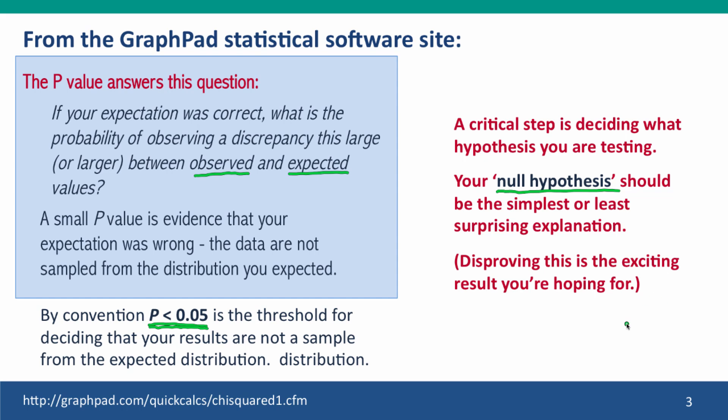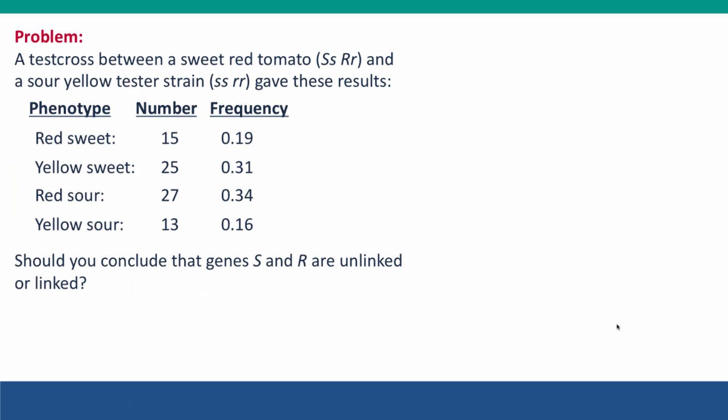So now we're going to do this in the context of a problem. Here's the problem: you're doing a test cross between a doubly heterozygous tomato plant and a homozygous recessive tester strain. You're given the data and then asked, should you conclude that the two genes involved, S for the sweetness of the tomato and R for whether it's red or yellow, should you conclude that these genes are unlinked or linked?